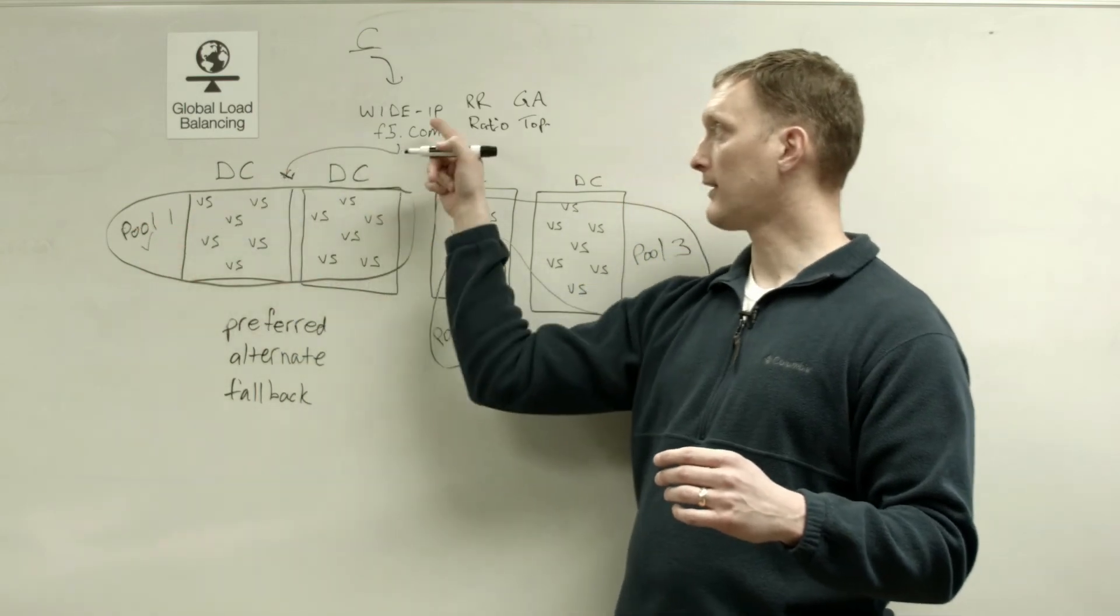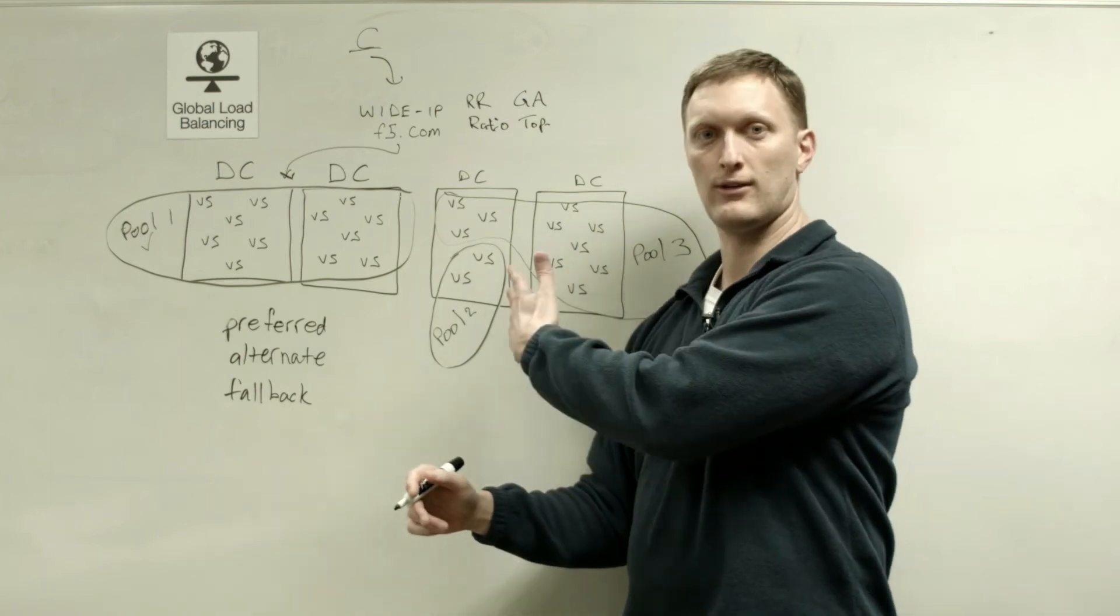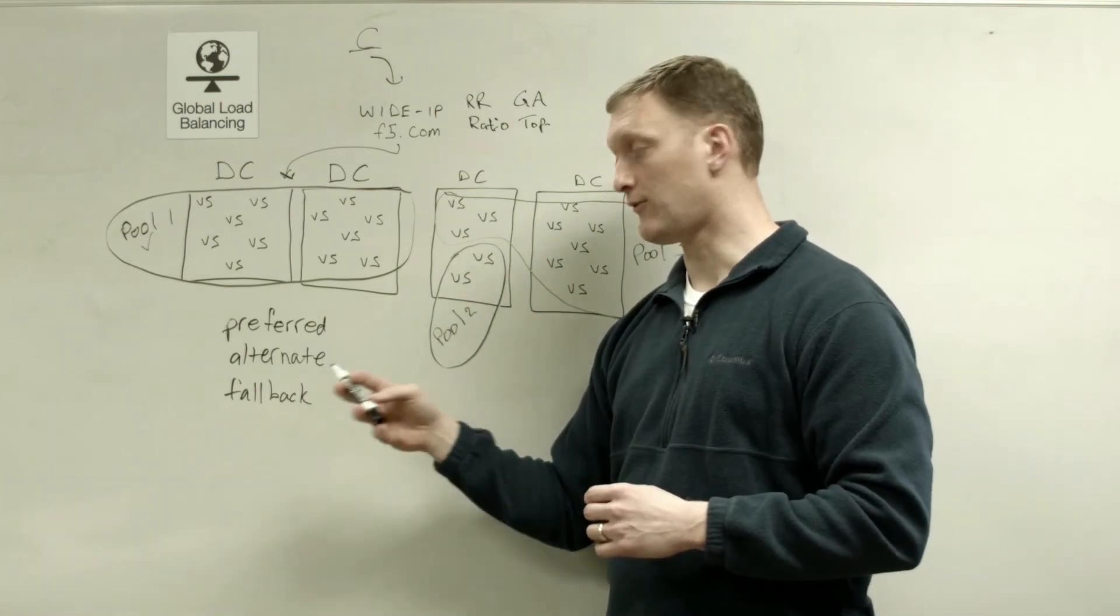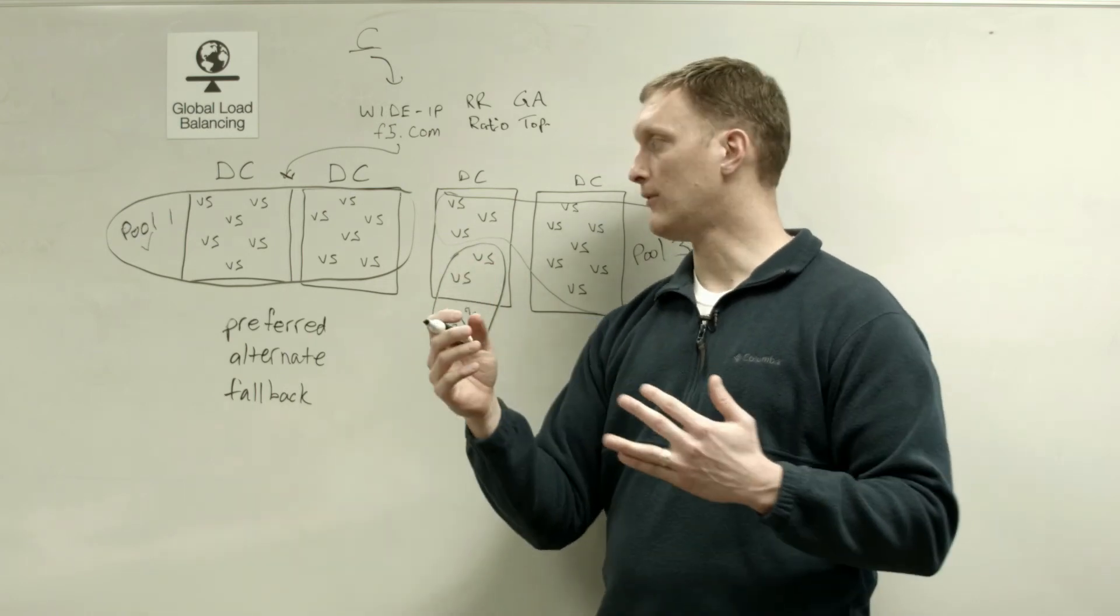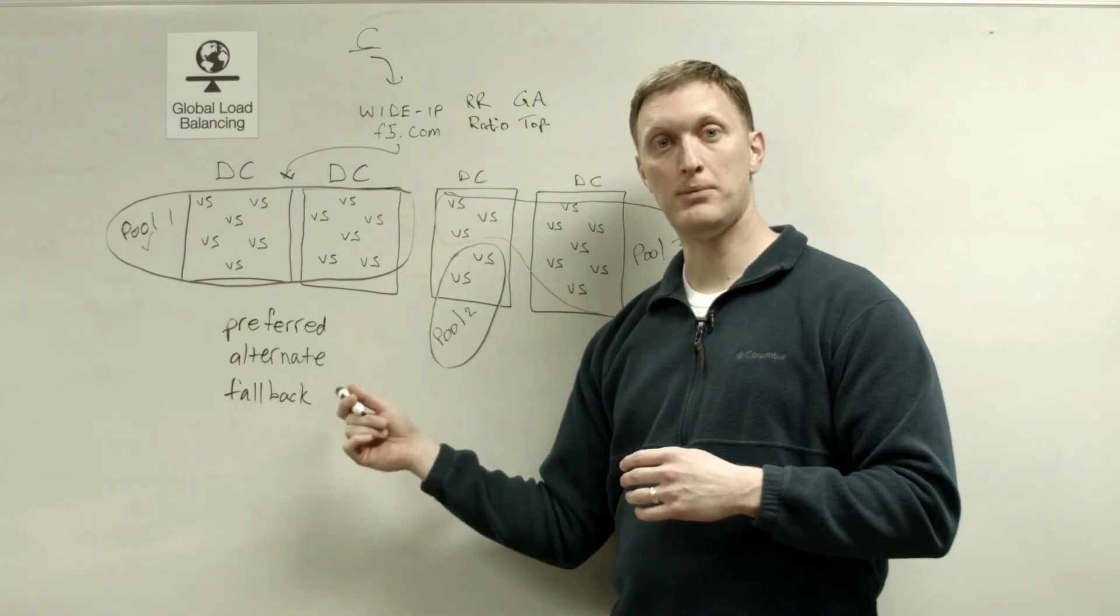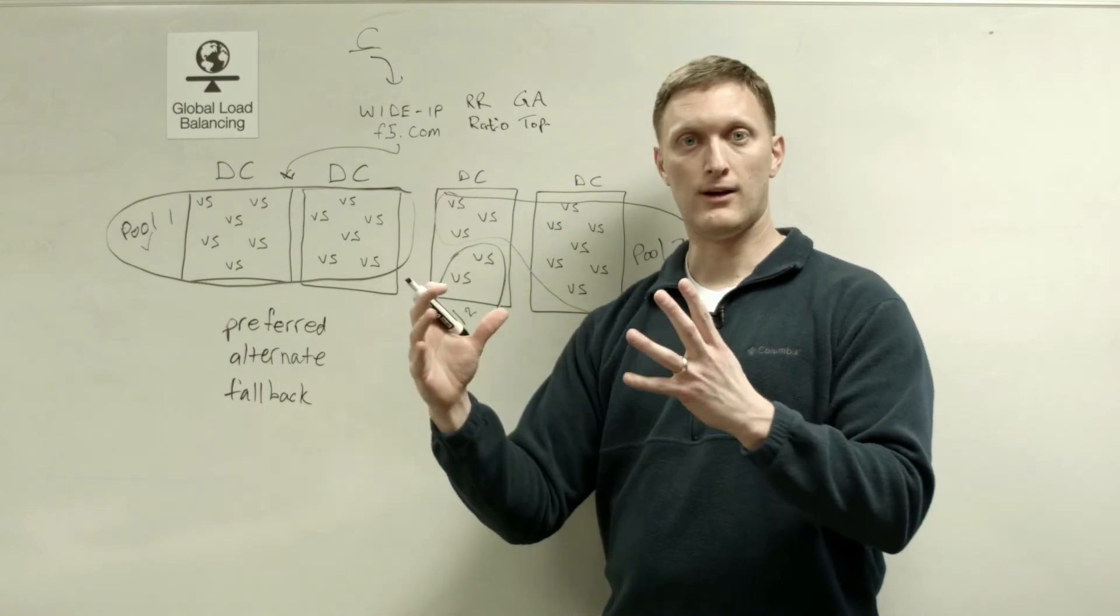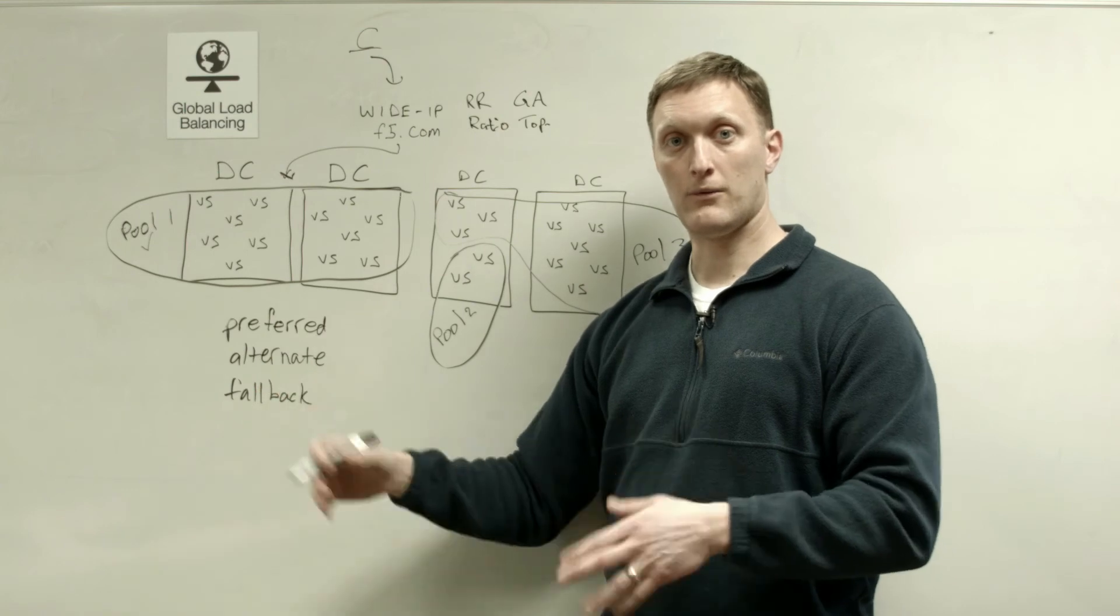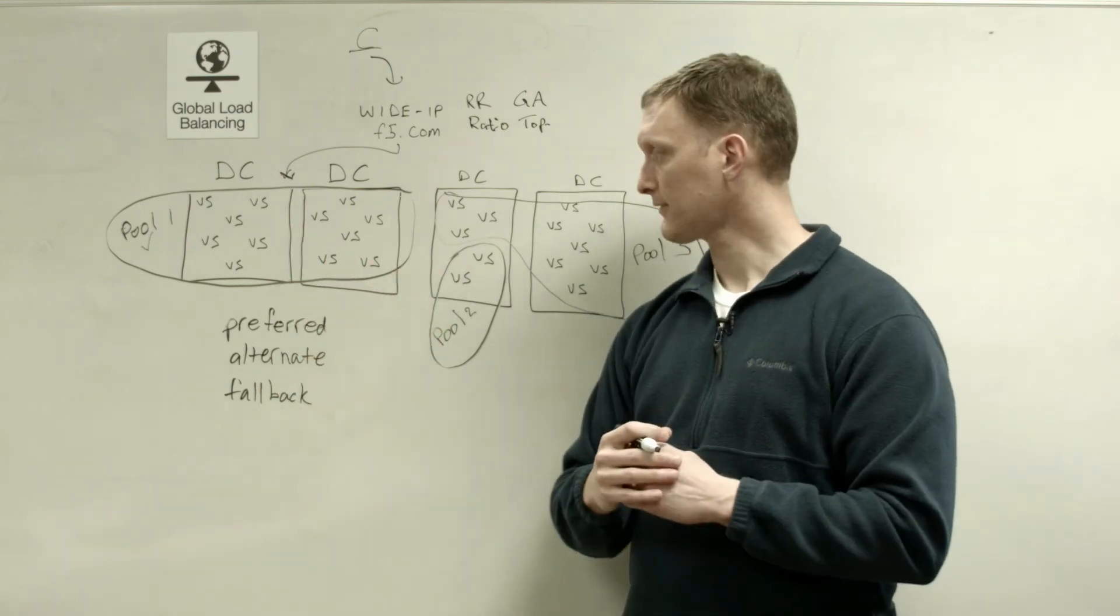So that's if you select none at the fallback level. You can also do drop packet at the fallback level, you can say return to DNS and just let bind respond, you can also do a fallback IP as an option at the fallback level. And that would be you establish an IP address that you want, again, if everything else does not work, then hey, I want to respond with this IP address, maybe it takes you to a maintenance page or something like that.